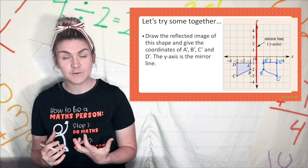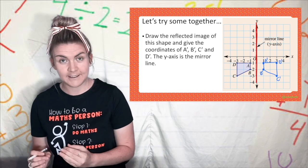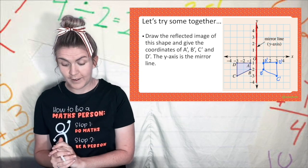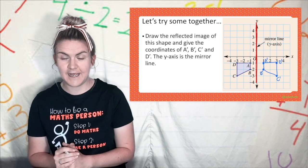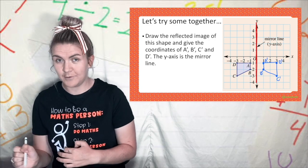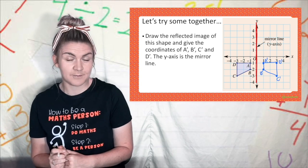I always want to check the reasonableness of it so I'm going to say has my shape changed size and it hasn't, has it been flipped over the correct mirror line, has it been flipped over the y-axis, yes it has. To check that I'm also going to check that all my letters are backwards and it does seem so, so I think this is a pretty reasonable result.